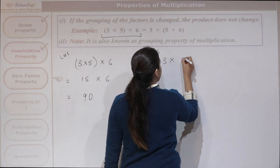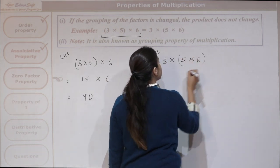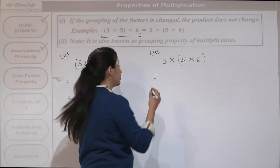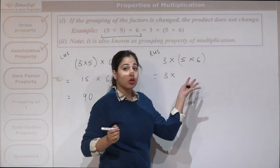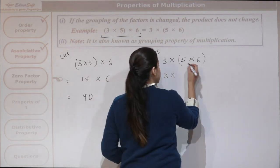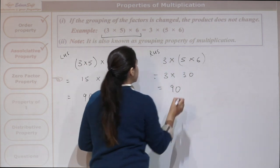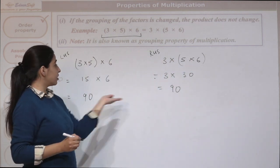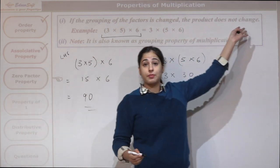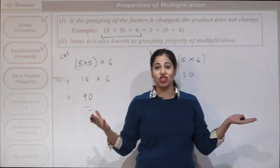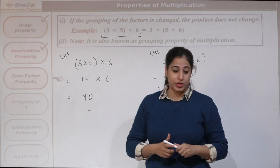3 times 5 times 6 — now we are grouping the third and the fourth number. So 3 will remain as it is; we will first solve the brackets. This is 30, and this is again 90. So the product is again the same — it does not change. This is the associative property.